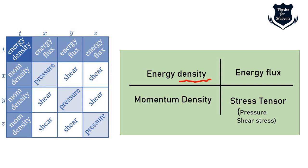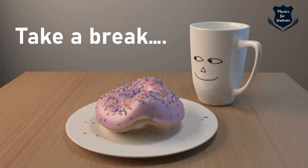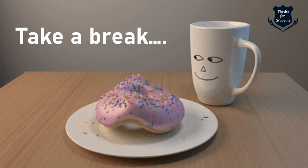To summarize the stress-energy momentum tensor: we covered energy density (first quadrant), energy flux (second quadrant), momentum density (third quadrant), and shear stress tensor comprising pressure and shear stress (fourth quadrant). All four quadrants contribute to making up the stress-energy momentum tensor, which eventually causes the curvature of spacetime. Time for a quick break — as a topologist would note, there's no difference between a coffee cup and a donut!